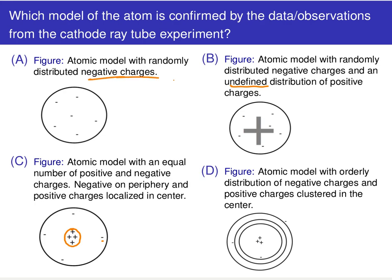But if we couple that with the fact that we started off with electrically neutral matter — well, if you pull negative charges out of neutral matter, that means there must be some positively charged particles present.